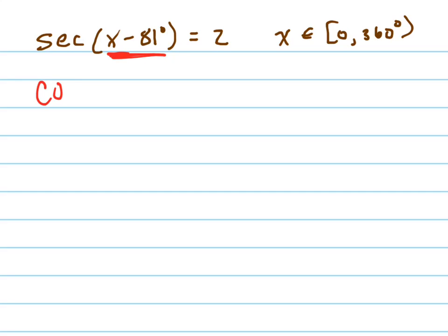So first of all, I'm going to convert this to a cosine graph, and the easiest way to do that is just to flip the other side. It's kind of like I took the reciprocal of both sides of my equation. Actually, that's exactly what I did. I took the reciprocal of both sides of the equation.